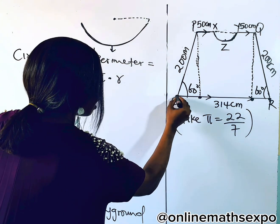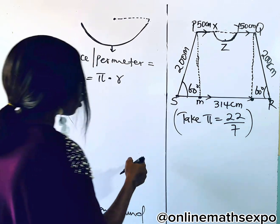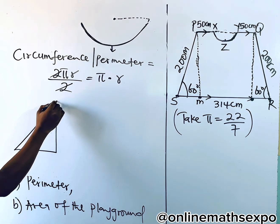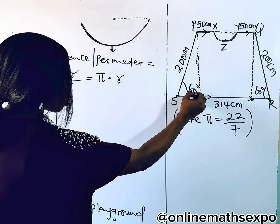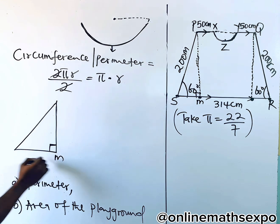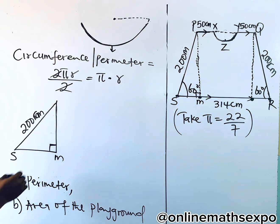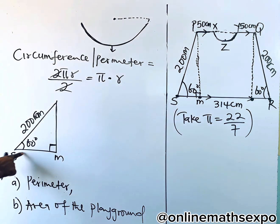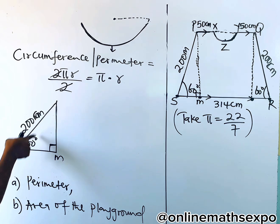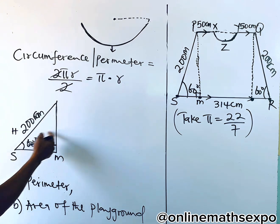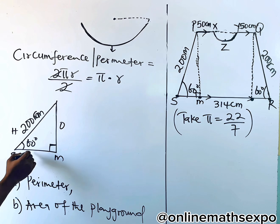To get this particular length, we can call this M. To find length SM, let's bring that shape out. Here is forming a right angle — it's a perpendicular line. This is M, this is S, and this side is giving us 200. The angle formed here is 60. To find this particular length, we are going to use trig ratios, because we have an angle and a side. This is the hypotenuse. The side we are looking for is the adjacent.